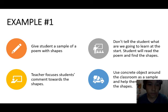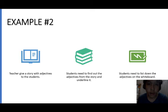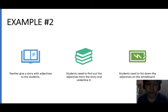Example number 2 is about adjectives. First, the teacher gives a story containing adjectives. Then students need to find and underline the adjectives from the story. Lastly, students list down the adjectives on the whiteboard. In that way, they will learn about adjectives.